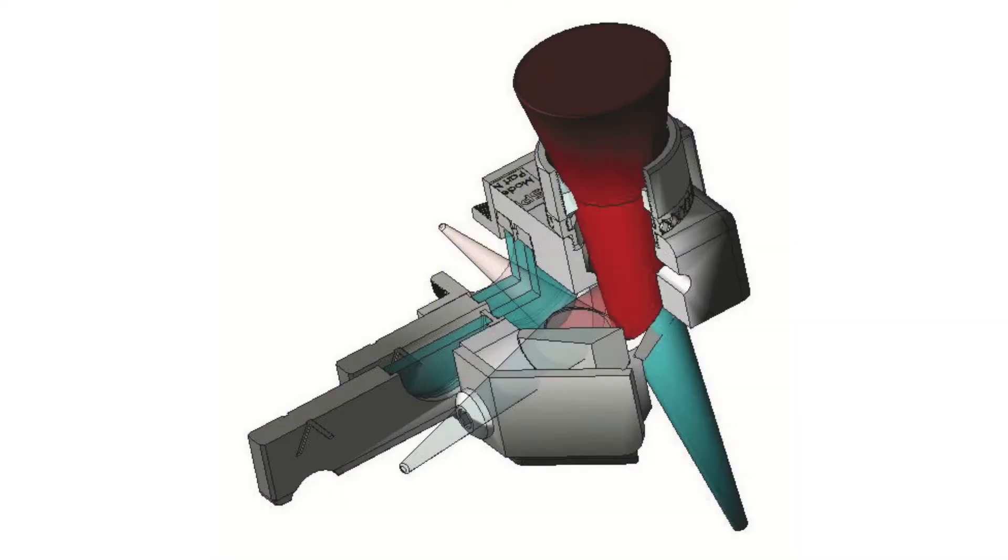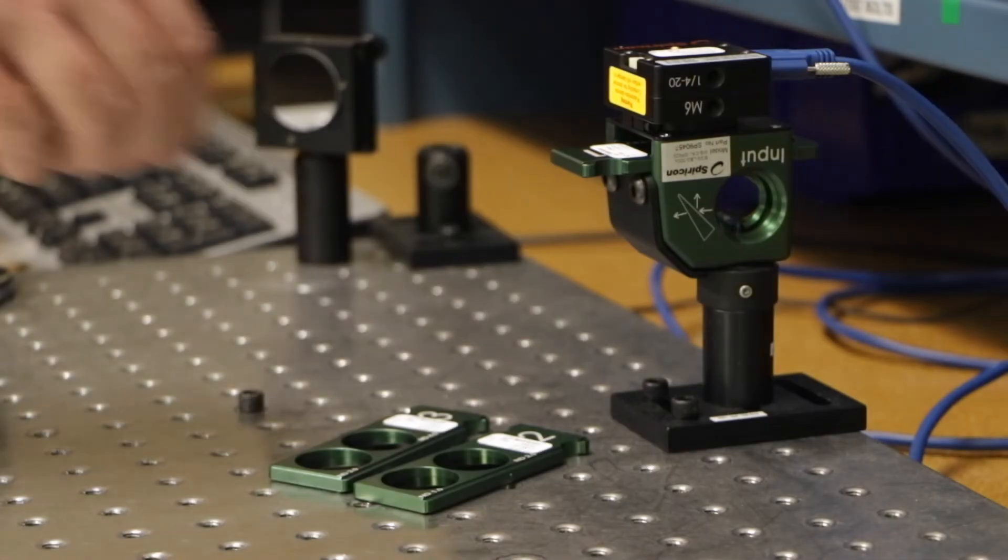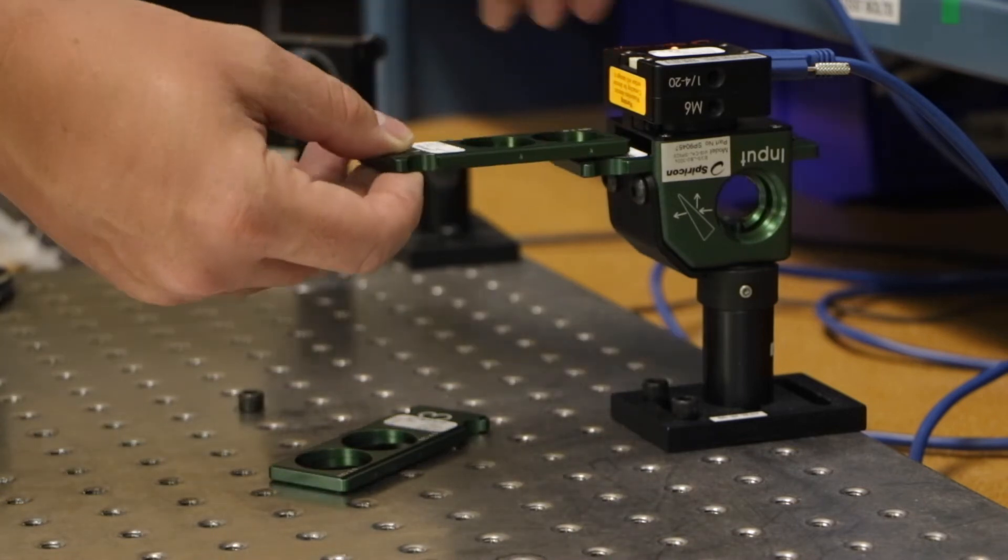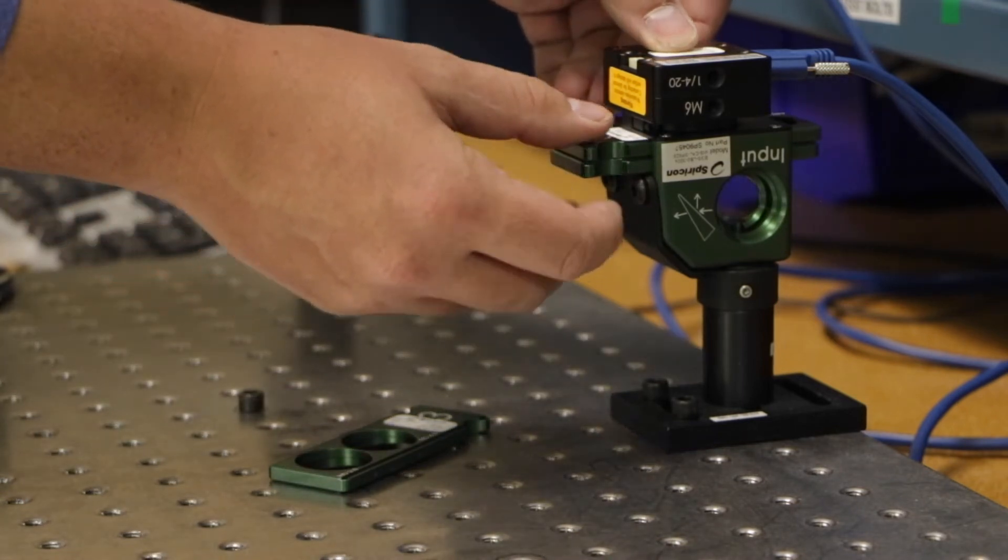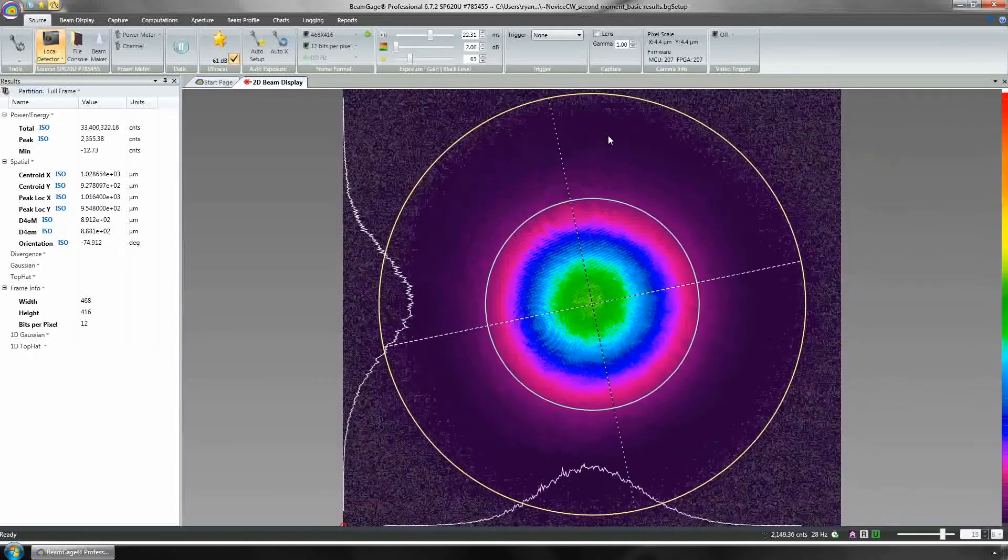The Ophir focal spot analyzer includes a dual surface optical attenuation device, a set of neutral density filters, a high-resolution 2.8 megapixel CCD camera, and award-winning beam gauge professional beam profiling software.